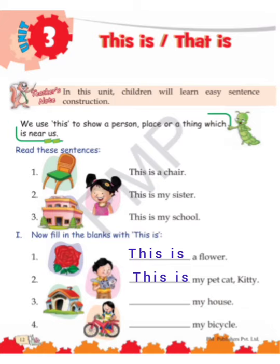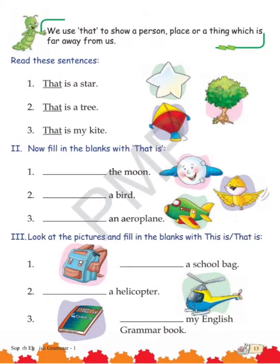Children, the third and fourth one is your homework — you will do it yourself. Now coming on to page number 13: we use 'that is' to show a person, place, or thing which is far away from us.